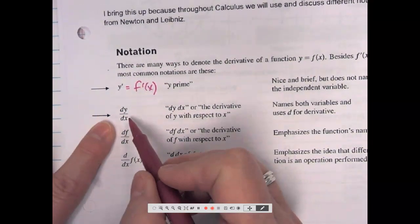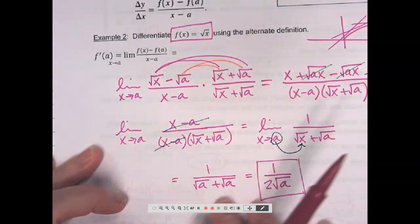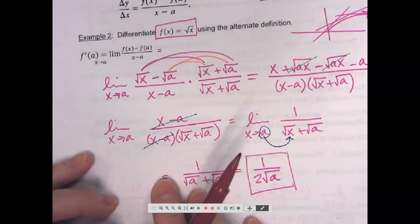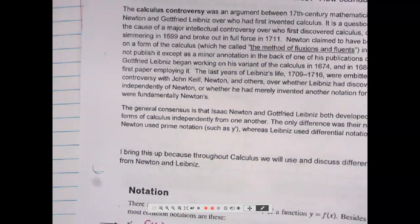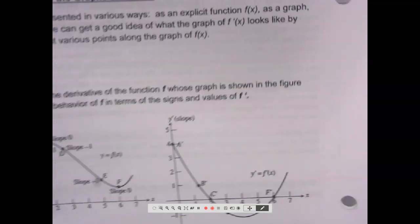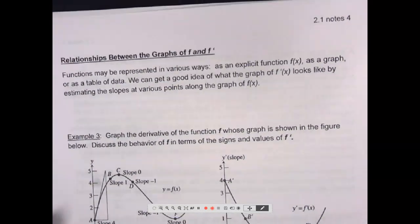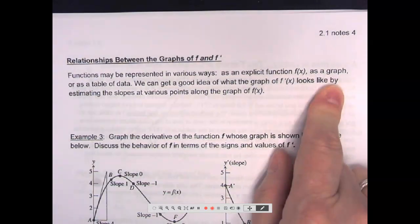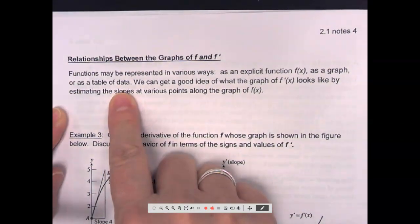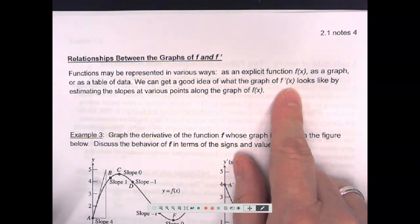So these are the two that we'll most often use. One coming from Newton and one coming from Leibniz. So when you see find DY DX or find Y prime, that little tiny statement means do all of this. Find the slope of the tangent. Find the instantaneous rate of change. Find how that function is changing at a particular point. Those two little expressions. Find the derivative or find Y prime. Pack a lot into those. We're going to have to reverse our brains here in a second. Functions may be represented in various ways. As an explicit function, F of X, as a graph or as a table of data. We can get a good idea of what the graph of F prime of X looks like by estimating the slopes at various points along the graph.